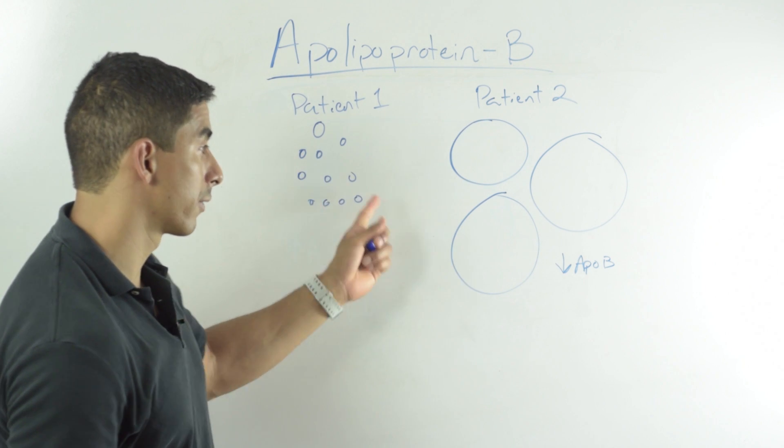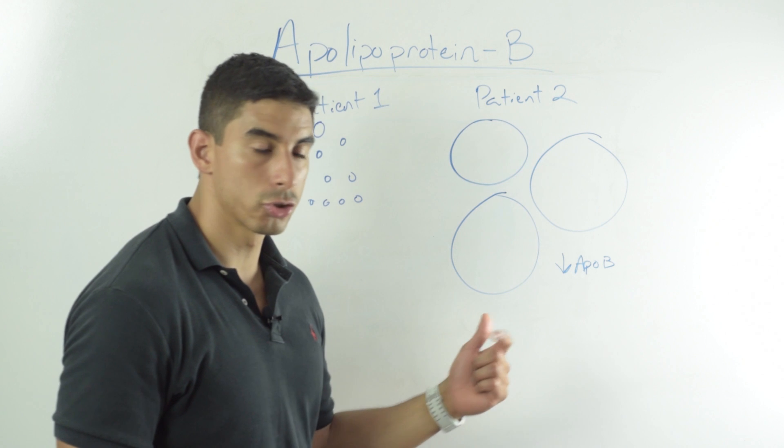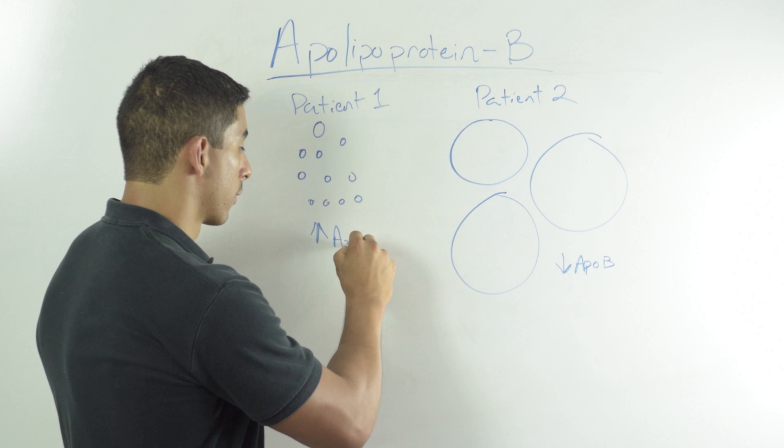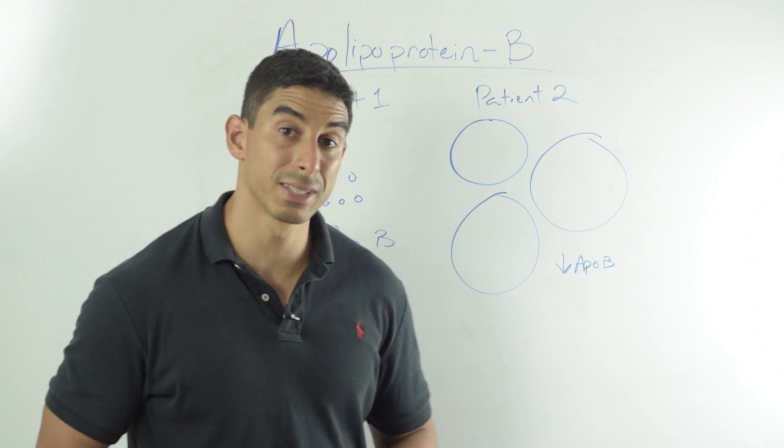So this is low ApoB and this guy patient 1 has lower cholesterol concentration. As you can tell they probably have less cholesterol total than what this person patient 2 has in one particle. But they have very high ApoB because every single one of these particles is going to have an ApoB protein attached to it.